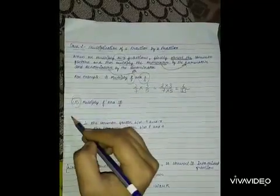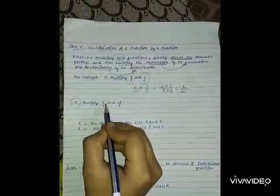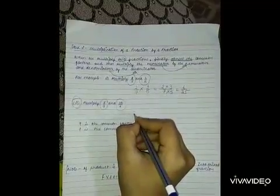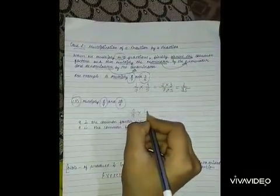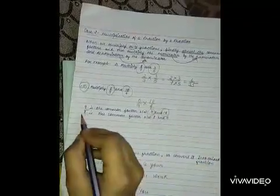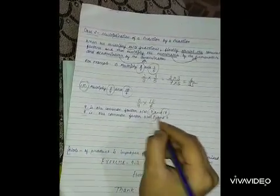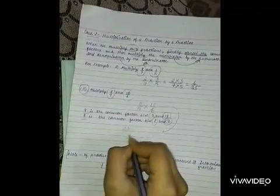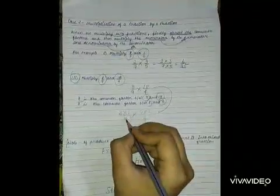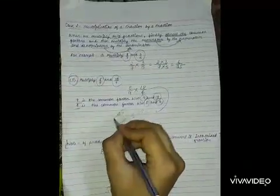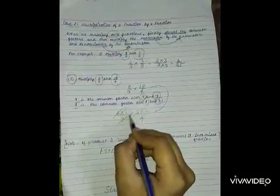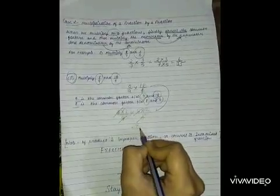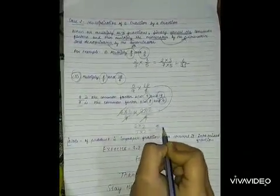Now let us take another example. Multiply 8 upon 9 and 18 upon 4. 9 is the common factor between 9 and 18, whereas 4 is the common factor between 8 and 4. So we cancel: 9 cancels with 9 and 4 cancels with 4. Now we get 2 multiply 2 upon 1 multiply 1 is equal to 4 upon 1 is equal to 4.